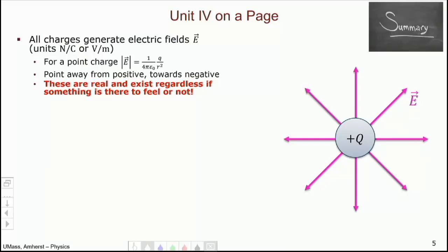And electric fields, if they're made by a positive charge like this one, they point away. If it were a negative charge, if this were an electron, the electric fields would point towards it.